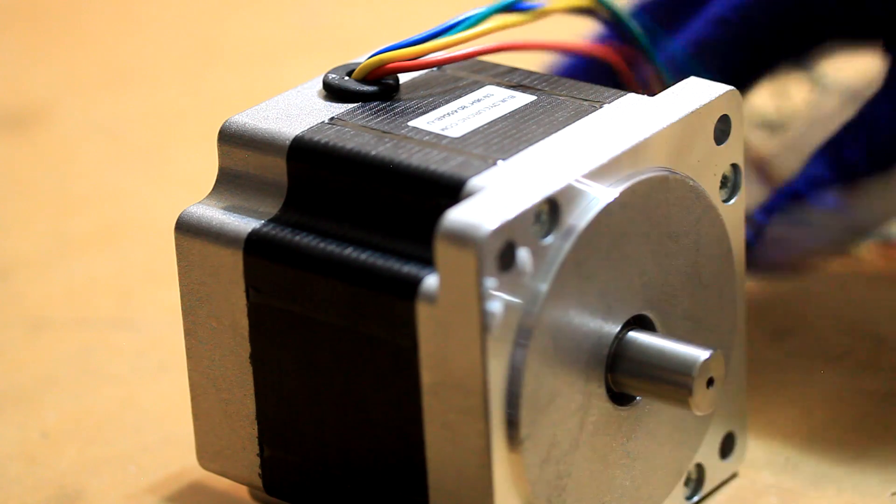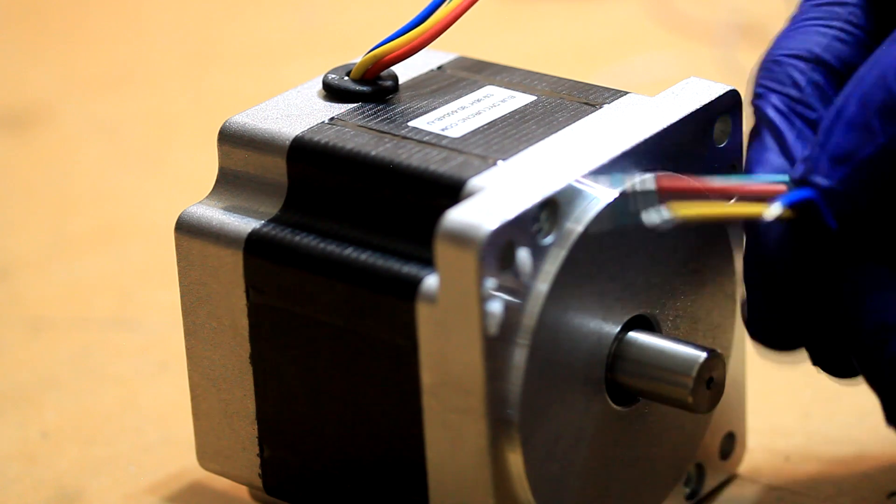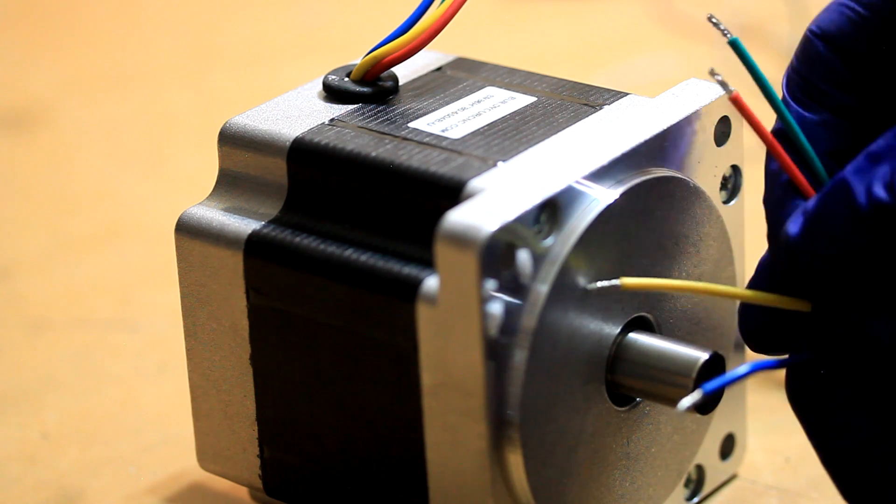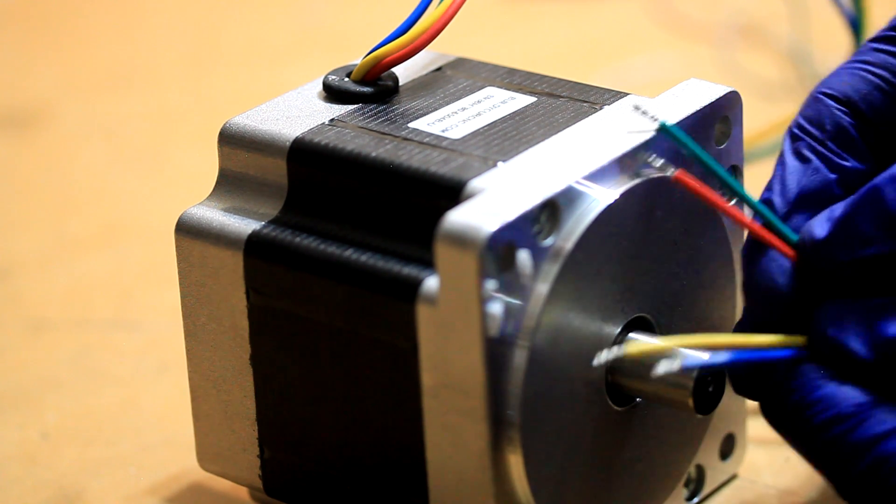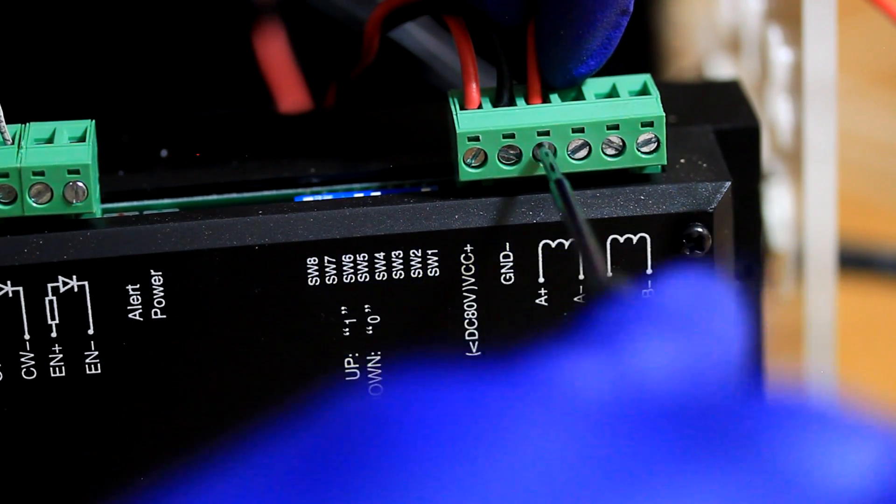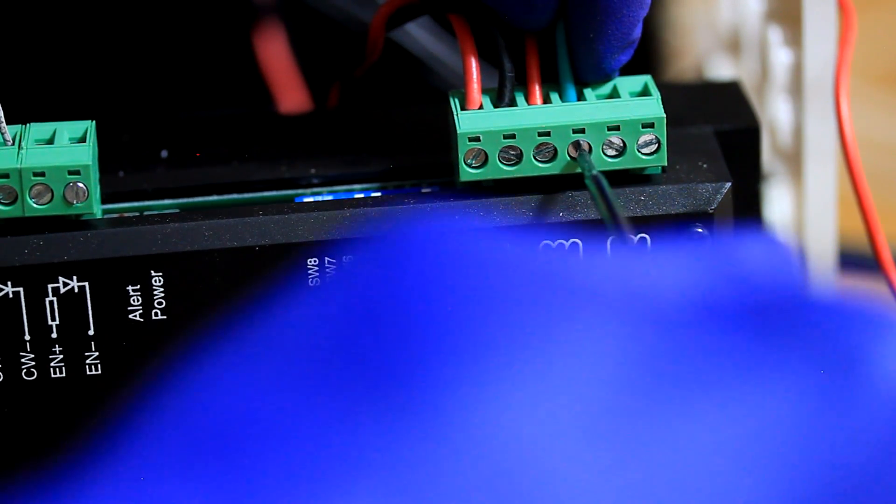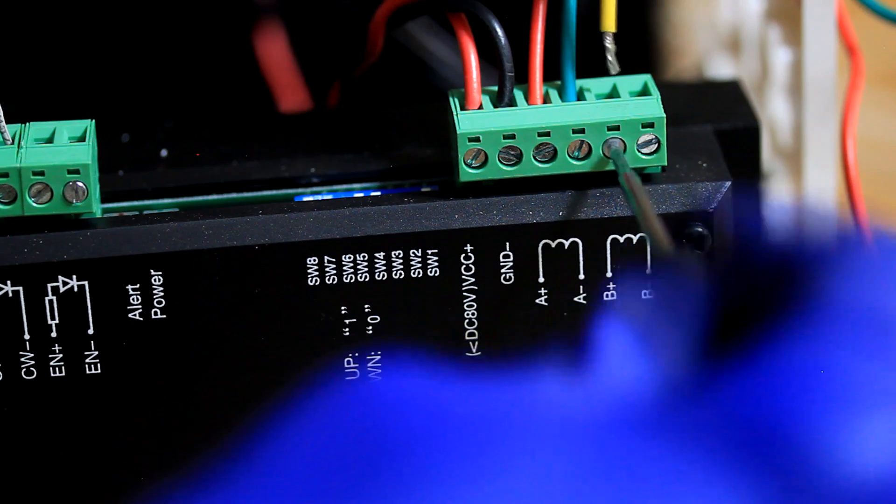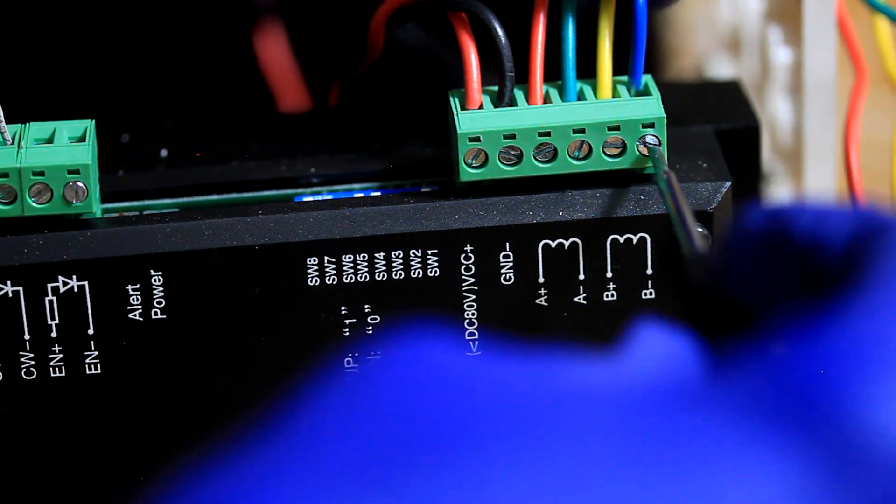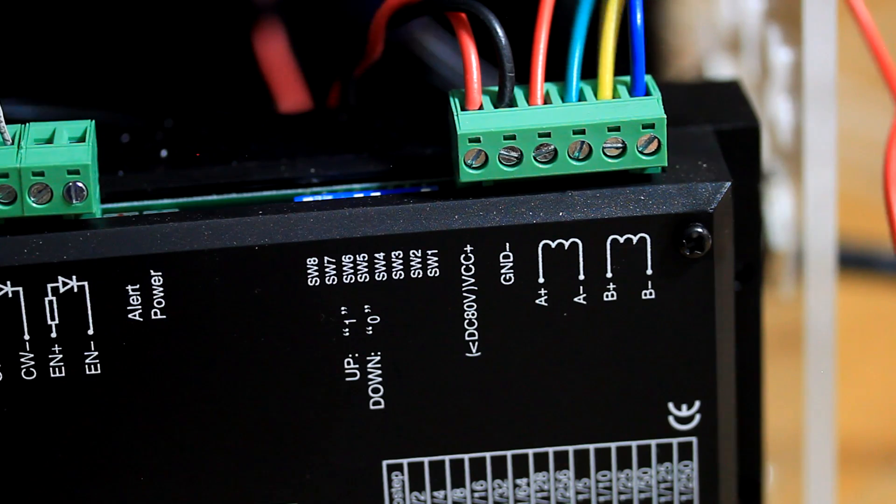The stepper motor that I'm going to be using is a NEMA 34 651 ounce inch stepper motor with four wires. This motor has two coils. The first coil is the red and green wires and the second coil is the blue and yellow wires. I'll start with the first coil, the red wire, going into A plus. The second wire of the first coil, the green wire, will go into A minus. The first wire of the second coil, the yellow wire, will go into B plus. And the second wire of the last coil is the blue wire and that's going into B minus. Confirm that all the connections are secure.